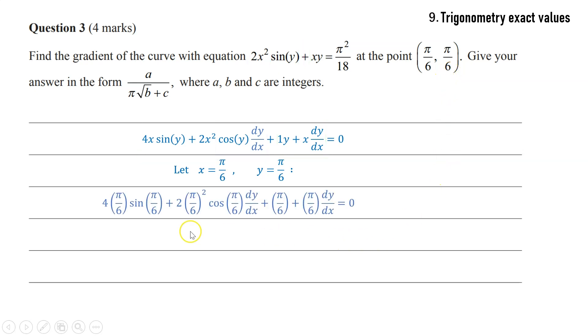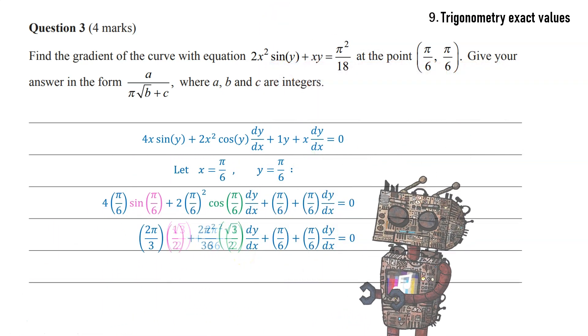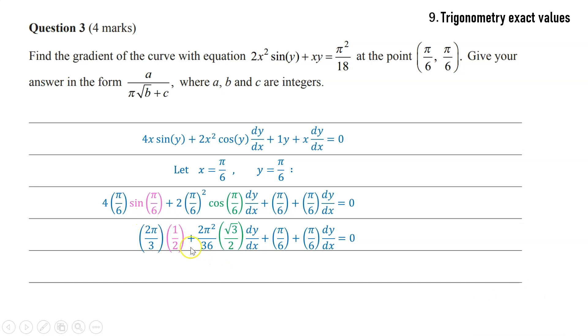When we do that, sine of π/6, √3/2, cosine of π/6, a half. Of course, sine of π/6 is a half, cosine of π/6 is √3/2. I'm sure you all know that, but everyone makes mistakes, so just check it carefully. Once we have it, we can just isolate dy/dx and then rearrange in order to solve the problem.